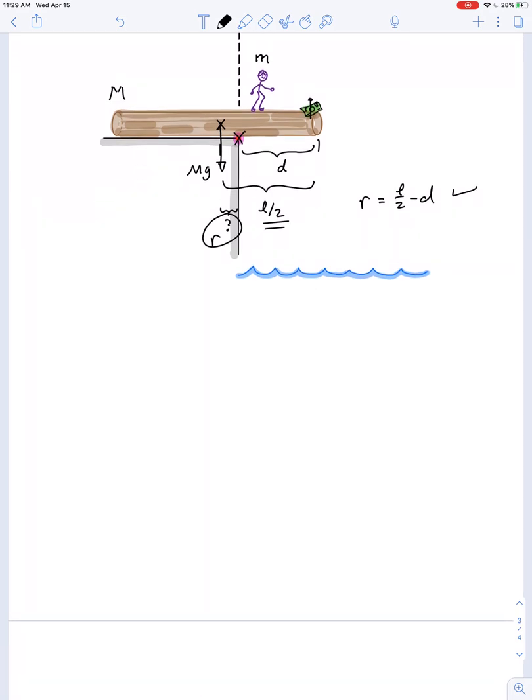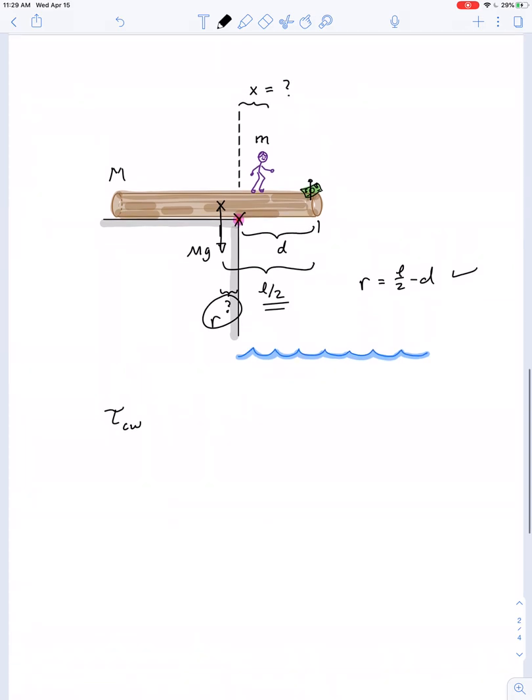So the clockwise torque is due to the weight of this person. So that's equal to, like any torque, it's force times lever arm. So we've already labeled his lever arm as X. So force times lever arm times sine theta. Well, the angle between his force vector and the lever arm is 90 degrees. So that's just going to go to 1.